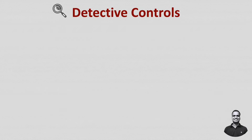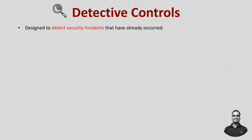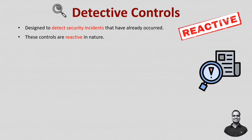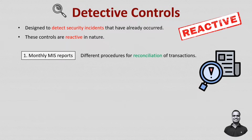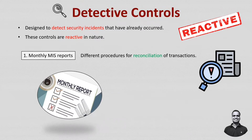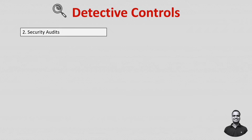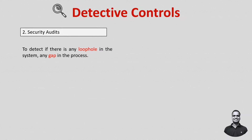Detective controls are designed to detect security incidents that have already occurred. These controls are reactive in nature — once an incident has occurred, they detect it after the fact. They are implemented to identify potential security breaches in a timely manner. Examples include monthly MIS reports, reconciliation of transactions, and conducting periodic security audits, which can detect loopholes or gaps in processes.